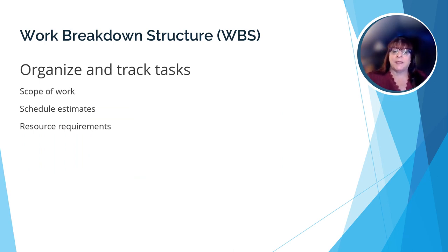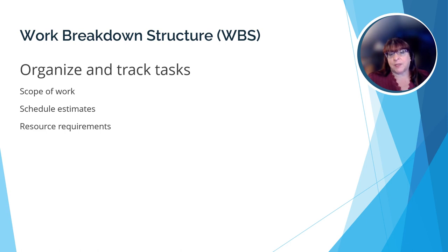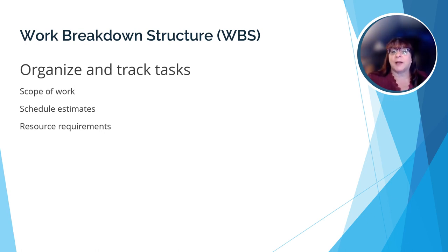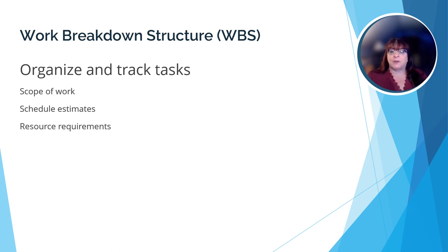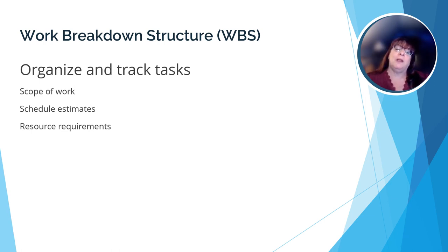We're going to look at the various elements of the Work Breakdown Structure, also known as WBS, and how project managers can use it to help them plan a project. The WBS is used to organize and track tasks, identify the scope of work, provide estimates for scheduling, and a preliminary list of resource requirements. It's important to note that the better and more defined the project is in the planning phase, the more likely it is that the project will end in success.